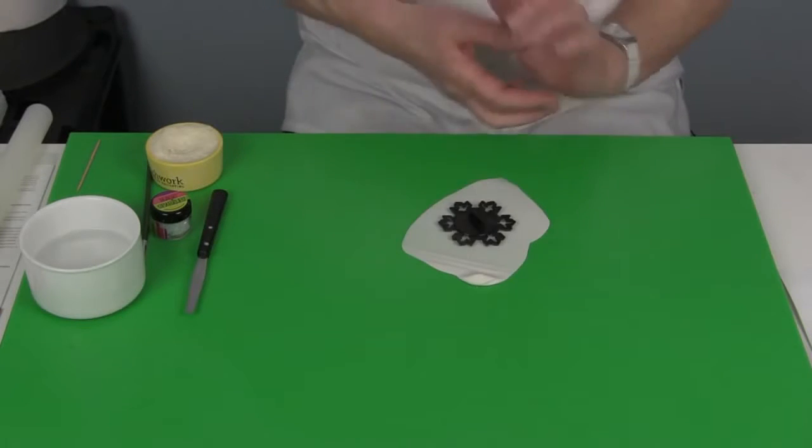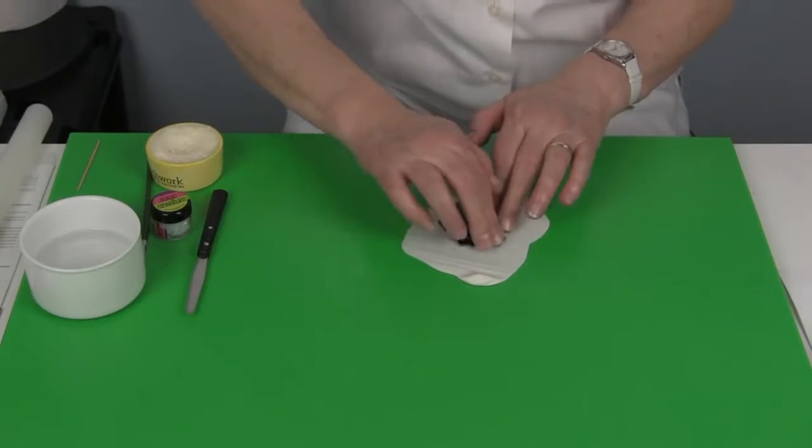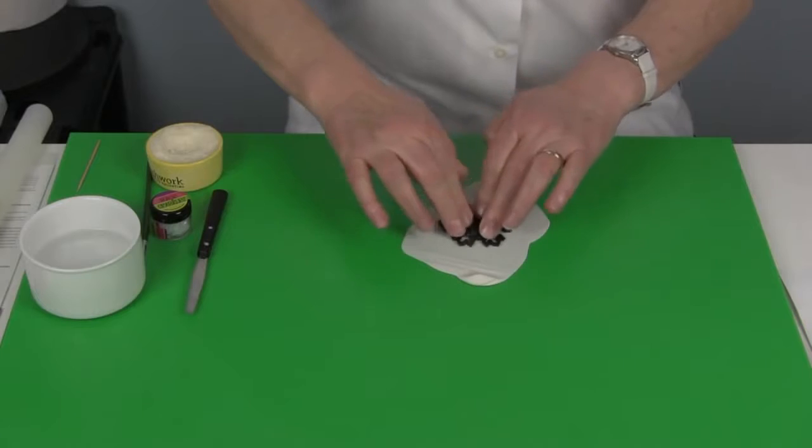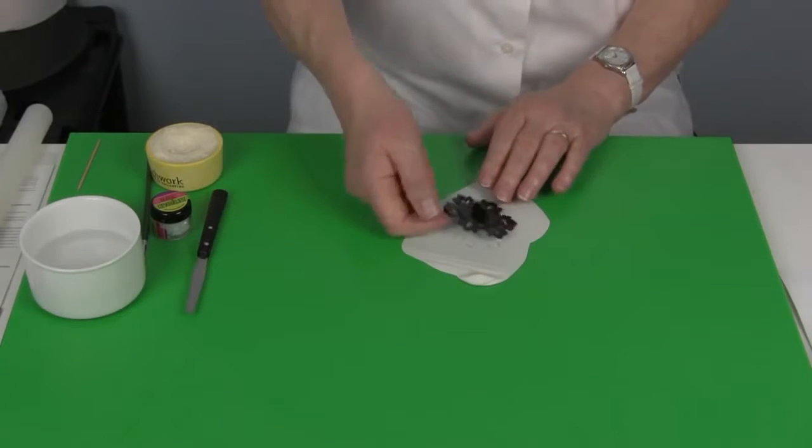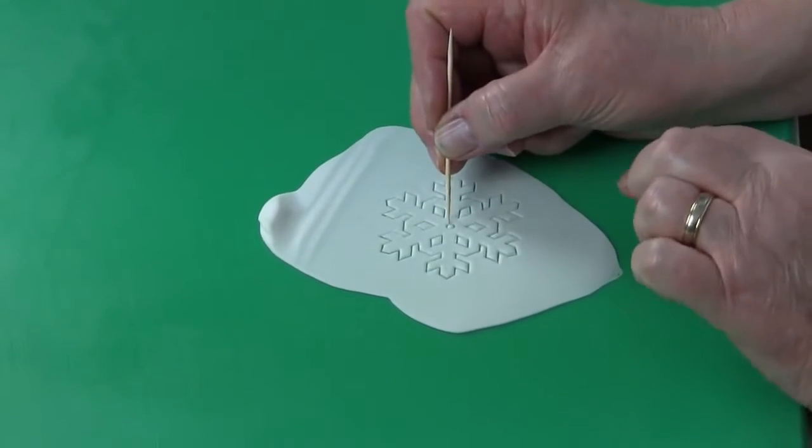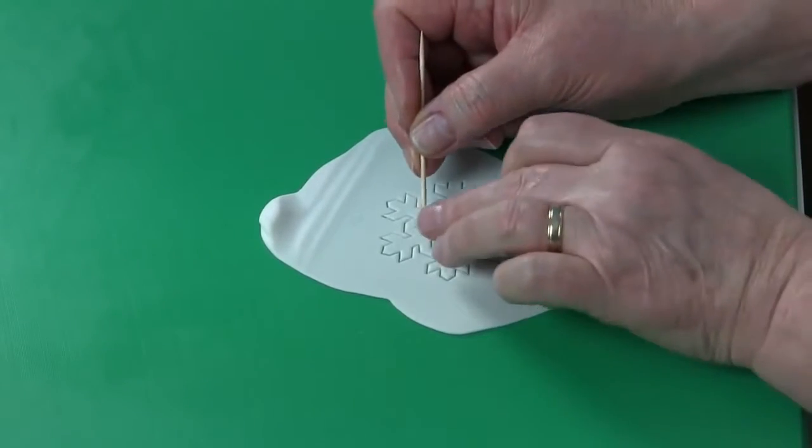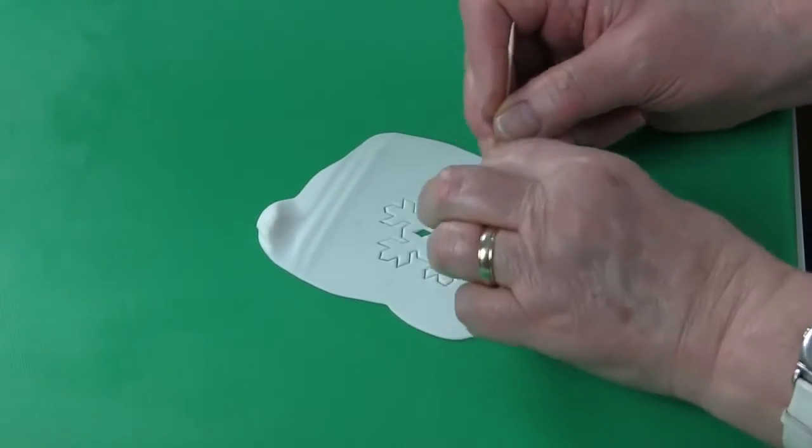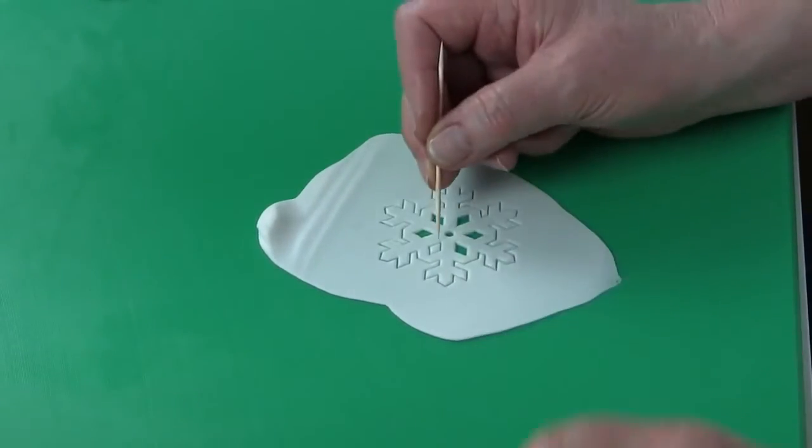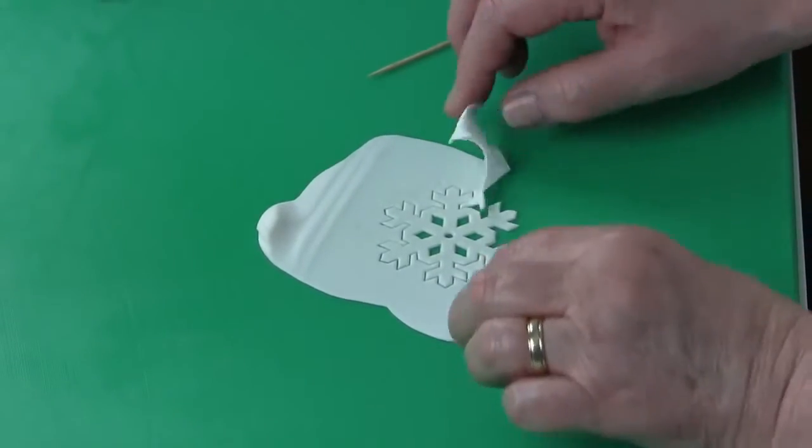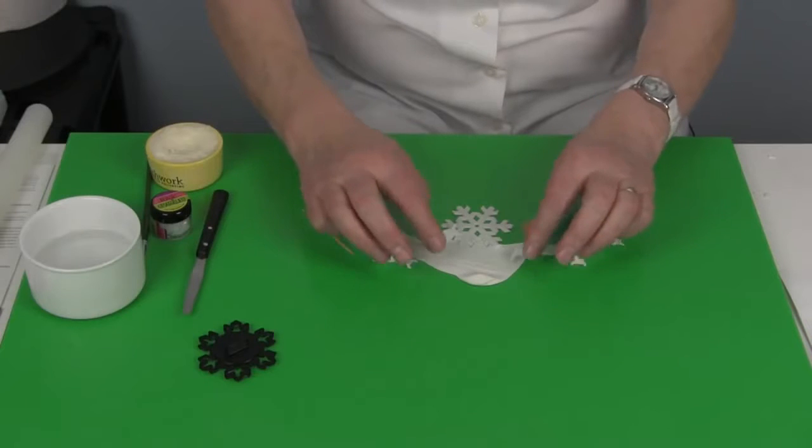Place that down onto the paste and press firmly around the edge and then onto the center. You have a little flip to remove that, and then use a cocktail stick just to pull out any of the inner pieces. Then lift and pull the paste from around the outside edge.